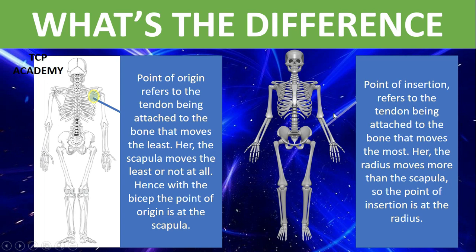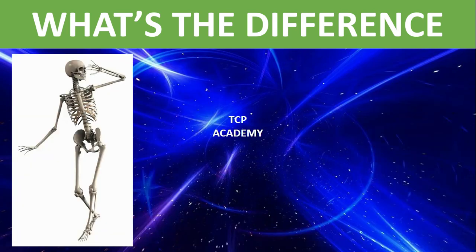What you're finding is that this bone would be moving far more than the scapula at the back here would move. You want to make sure you understand the difference here with the point of insertion and origin. Flexing the arm, you're seeing the radius being moved more than the scapula, as the scapula sits nicely to the back right here, and it barely moves, if any, at all.